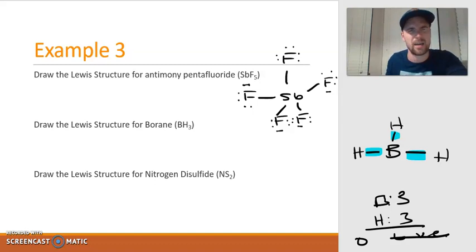2, 4, 6. Wait, that can't be. Yes, it can. Because remember, boron is an exception. Boron's happy with six. So we're a-okay there.